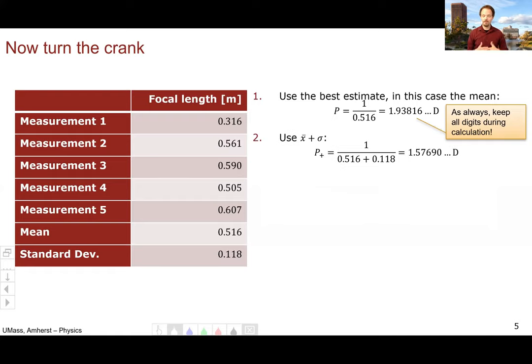The second crank, we use the upper error bar. So in this case, we'll use the mean plus the standard deviation. So we'll add 0.516 and 0.118, put that underneath the one to calculate the power, and I'm going to indicate that with this p plus symbol. And the result will be 1.57 diopters.